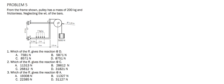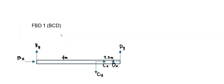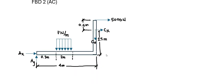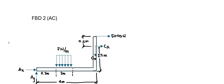Starting with our first free body diagram, BCD, notice that we have 6 unknowns, which means that given we only have 3 equations of equilibrium, there is not much we can solve here. Therefore, we proceed with the other member, AC, and see what we can get. For the free body diagram AC, we expose unknowns AX, AY, CX, and CY, and there are still more unknowns than available equations.